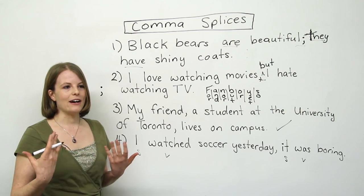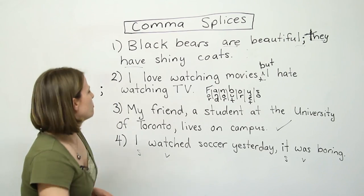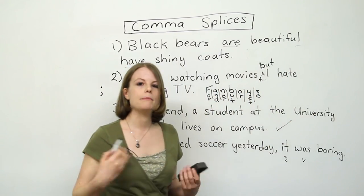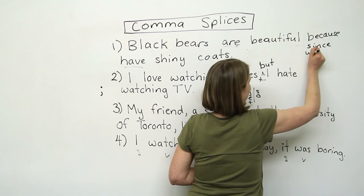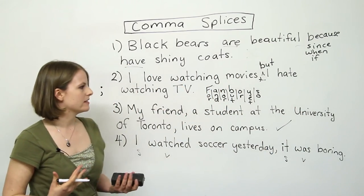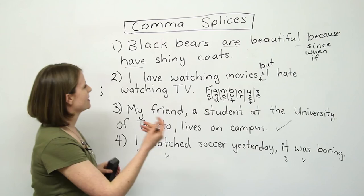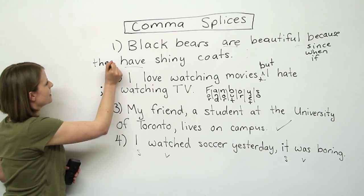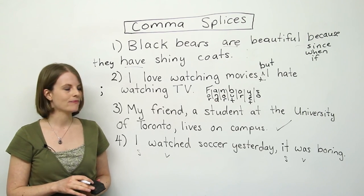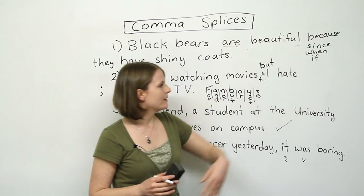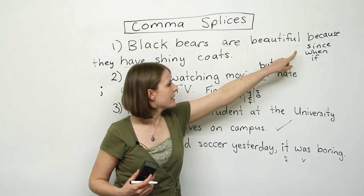The final way is to use dependent clauses — specifically subordinating conjunctions. We can use words like 'because,' 'since,' 'when,' and 'if.' These words make the second part of the sentence a dependent clause. For example: 'Black bears are beautiful because they have shiny coats.' Or: 'Black bears are beautiful since they have shiny coats.' 'When they have shiny coats.' 'If they have shiny coats.' With these words — because, since, when, if — you don't need a comma. Whereas with the FANBOYS, you do keep the comma.